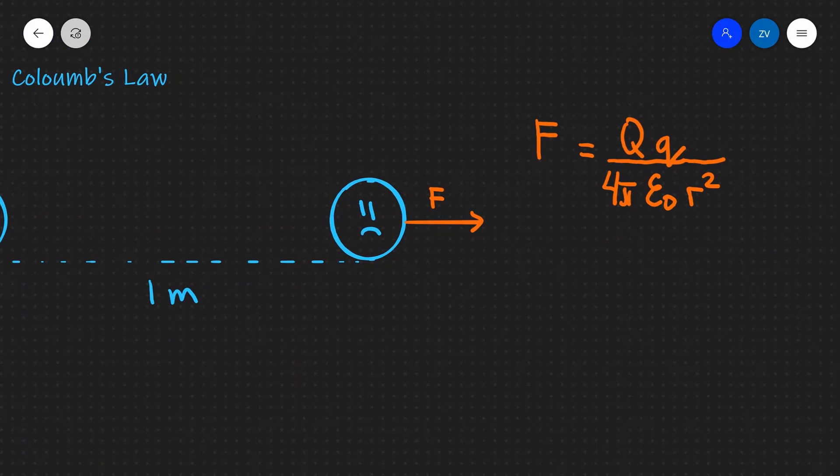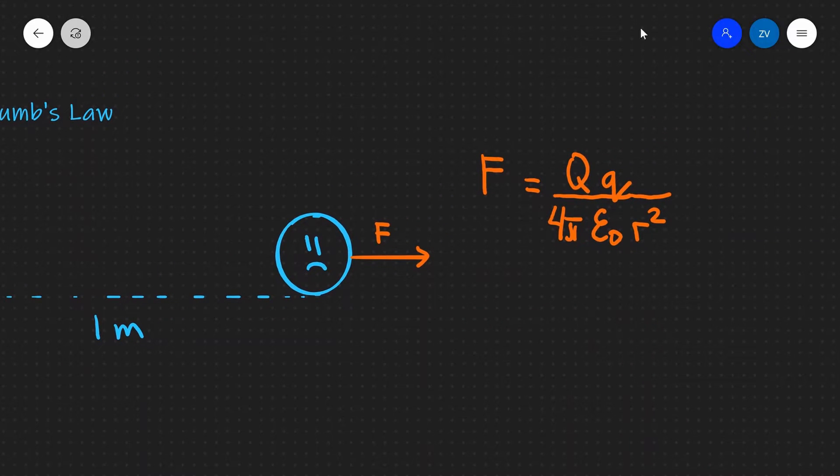And this over here is Coulomb's law. Once again, q is the magnitude of one of the charges, lowercase q is the magnitude of the other charge, 4 pi is just a constant, epsilon naught is also just a constant which is the permittivity of free space, and r squared is the separation between the two charges.